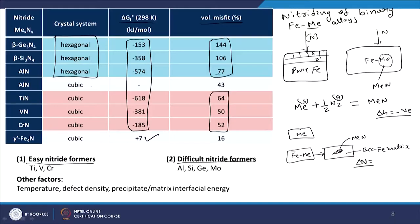There are also other factors to consider beyond Gibbs energy and volume misfit. When a new phase of iron nitride forms, a new interface is created in what was previously a homogeneous alloy. The interfacial energy also plays a role in determining whether an element is an easy or difficult nitride former. Consideration of interfacial energy further favors titanium, vanadium, and chromium nitrides as easy nitride formers.